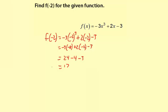So there we have f of negative 2 equals 17. And what that means conceptually: input a negative 2 into this function, and your output is positive 17.